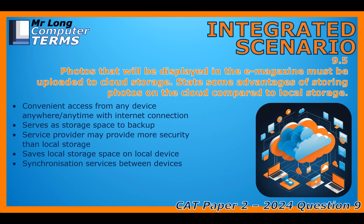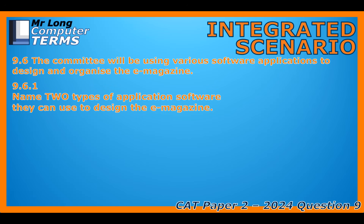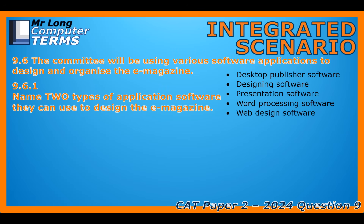Let's shift gears to the actual creation phase — the design of the e-magazine. The committee has quite diverse options when it comes to application software. The sources mention potentially using specialized desktop publisher software that gives very precise layout control, or general designing software. For quick mock-ups or basic pages, they might even repurpose presentation software like PowerPoint or Keynote. Essential content work like writing articles will almost certainly use word processing software. And if they plan to host the e-magazine on a web page, then web design software would be necessary too.